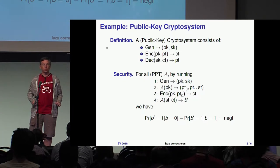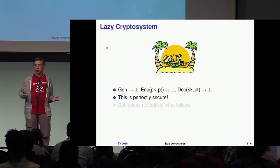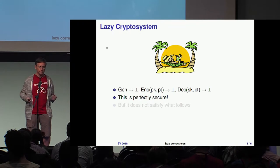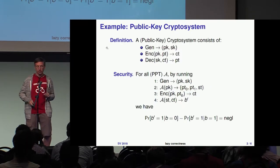If you have such a contract, you're super happy because you have nothing to do. You just take the lazy crypto system which does nothing. Key generation returns nothing, encryption returns nothing, decryption returns nothing.